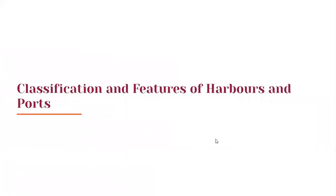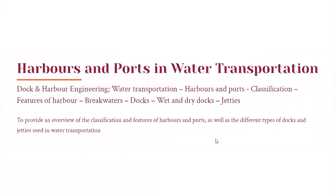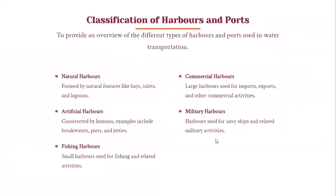Classification and features of Harbors and Ports in water transportation. To provide an overview of the different types of harbors and ports used in water transportation. First is natural harbors, formed by natural features like bays, inlets and lagoons. Then artificial harbors, constructed by humans, examples include breakwaters, piers and jetties.